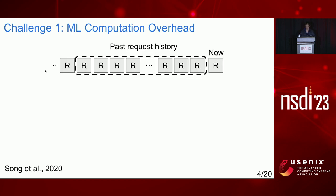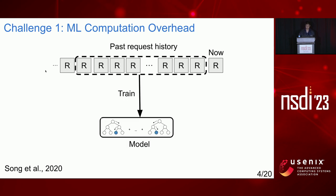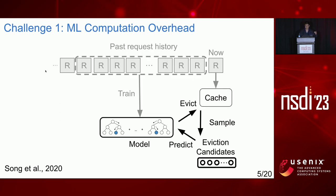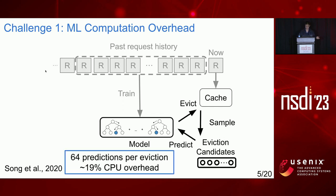Using the LRB algorithm as an example, which is a state-of-the-art learning-based algorithm: it keeps past request history and uses it to train a regression model to predict an object's time-to-next-access. The training needs to cover all objects in the past request history window. When doing an eviction, LRB randomly samples 64 objects as eviction candidates, runs predictions on those, and evicts the object with the largest predicted time to next access. Those 64 predictions are expensive and would cost 19% additional CPU overhead.